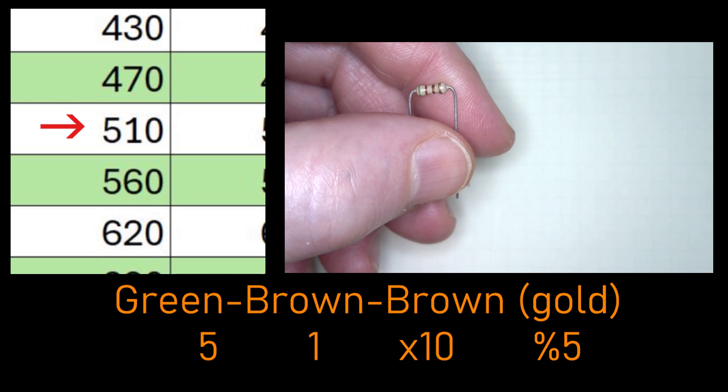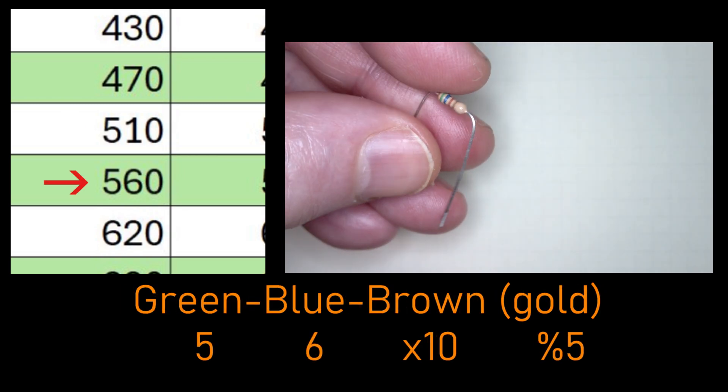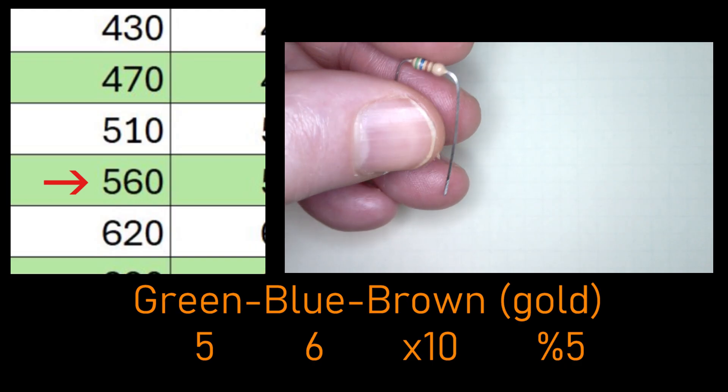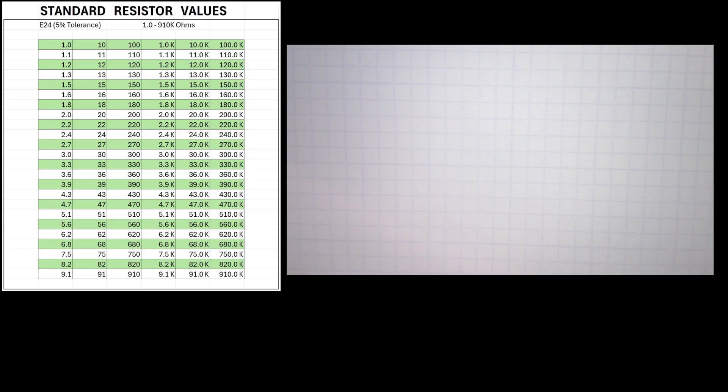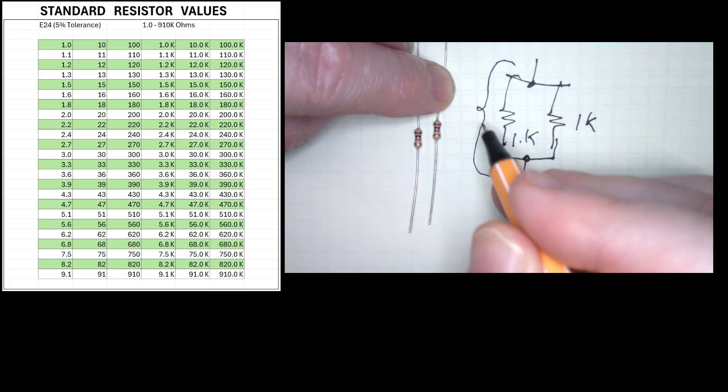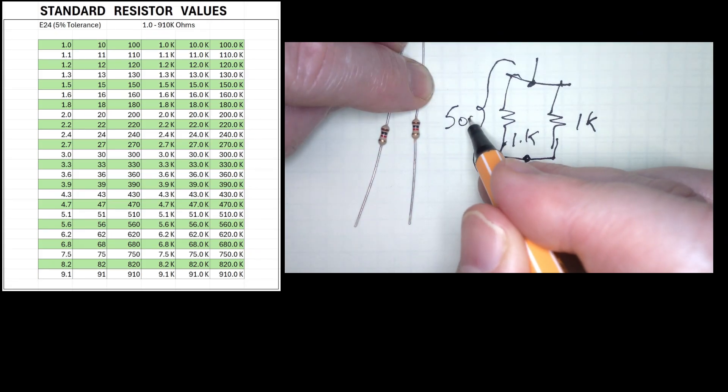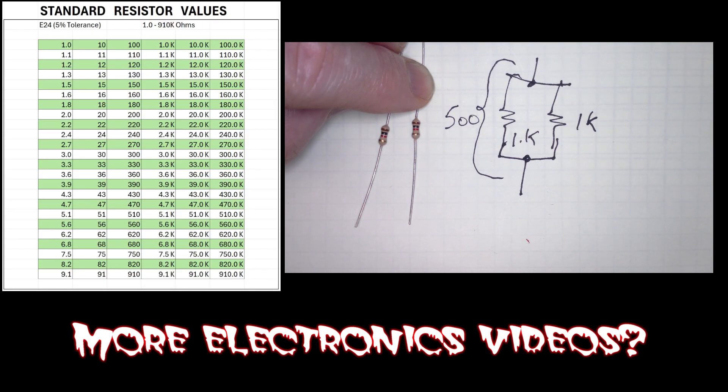The closest standard resistor to 500 ohms is a 510 ohm resistor. The second choice might be a 560. If you don't have or can't find those resistors, it's safe to increase the resistance to the next value. It will just mean that the LED will be dimmer. Another trick to make 500 ohms is to parallel two 1k ohm resistors. But this is getting too deep into electronics for this video. However, if you're interested in more in-depth electronic videos, please let me know down in the comments section.